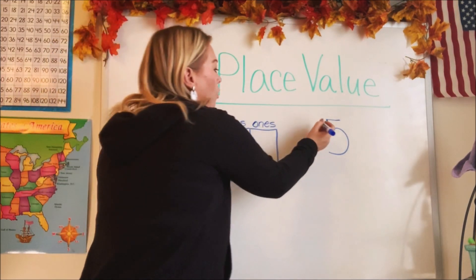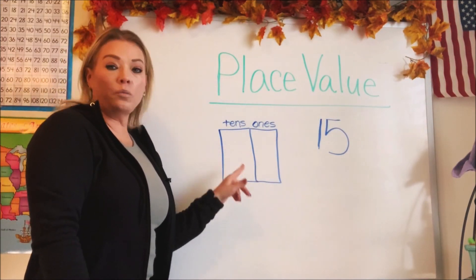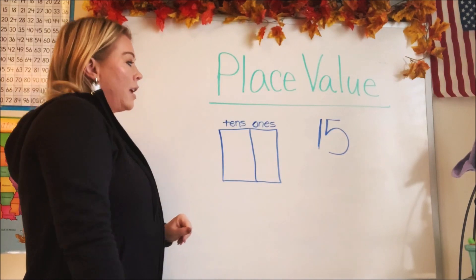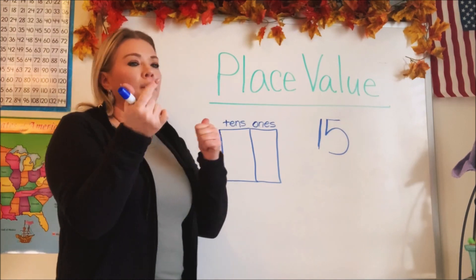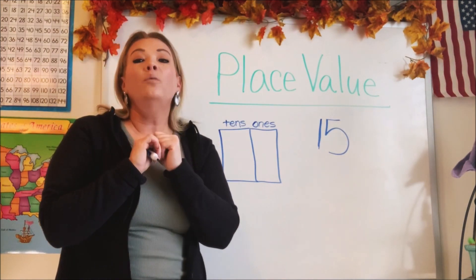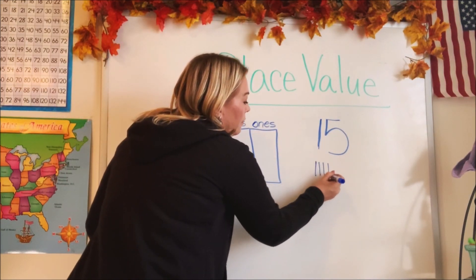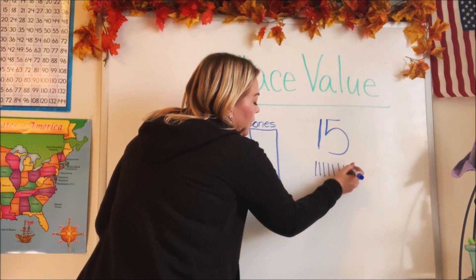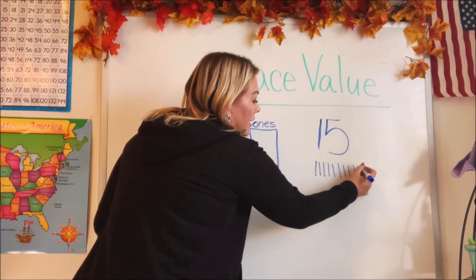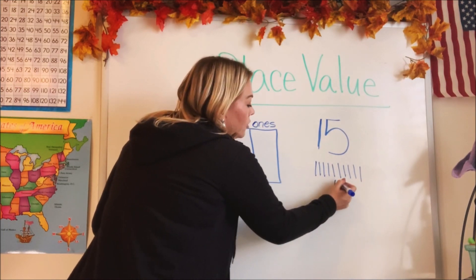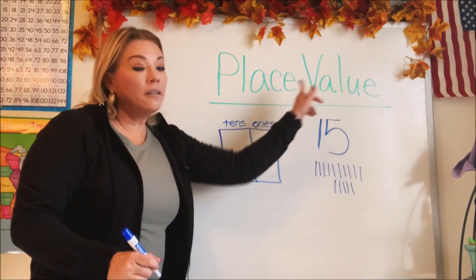Now do you think you know which number goes in which box? Well, how many ones are there in 15? If we were to count to 15 on our fingers, how many fingers would we use? We'd use 15, because there's 15 ones. If we wanted to count to 15 by ones, we'd have to put 15 ones out: 1, 2, 3, 4, 5, 6, 7, 8, 9, 10, 11, 12, 13, 14, 15. There are 15 ones in 15.